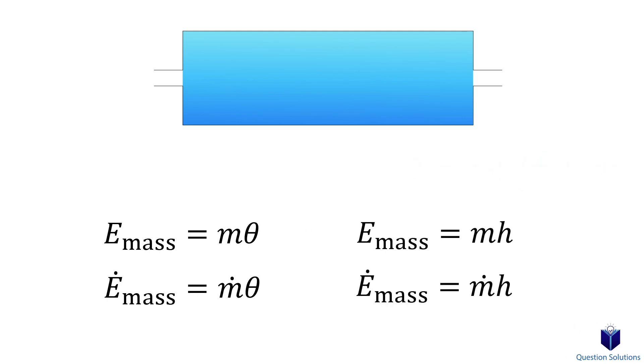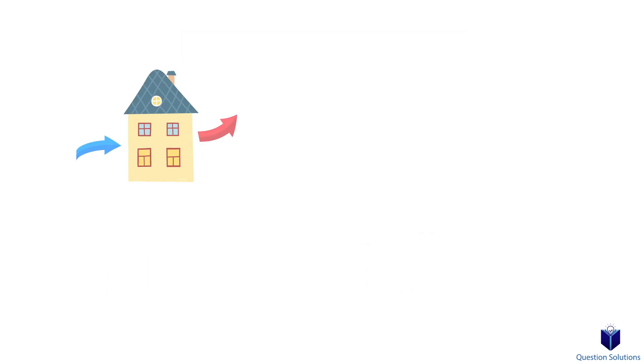Whenever kinetic energy and potential energy are negligible, then from our previous equation these parts become zero, so energy transport equations also end up simplifying to just mass times enthalpy. Now let's get to some examples to see how we can use the equations we talked about.